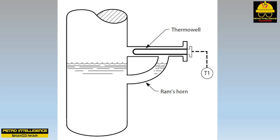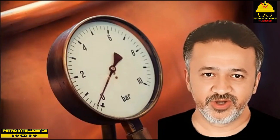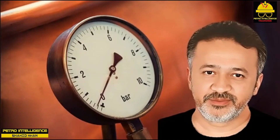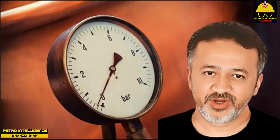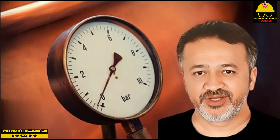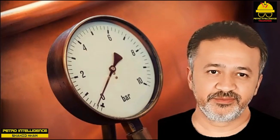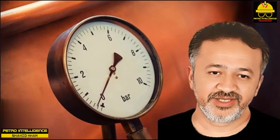If two temperature readings from the same process point disagree, the temperature indication is more likely to be accurate than the temperature control signal. The temperature signal used for control has usually been converted from its direct milliamp output to operate a control station, whereas the temperature indication is generated directly from the thermocouple junction — giving less chance for error. Thank you for watching — please follow the Petro Intelligence YouTube channel for more videos.